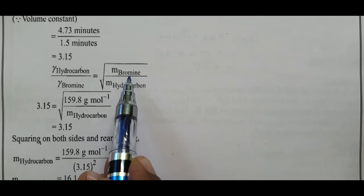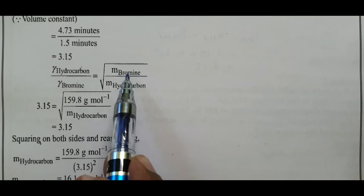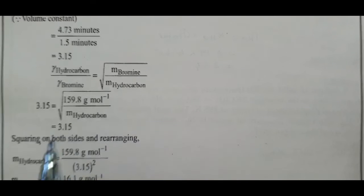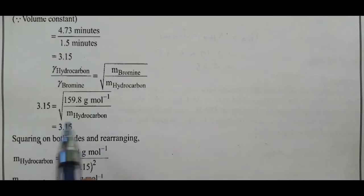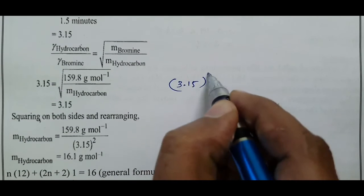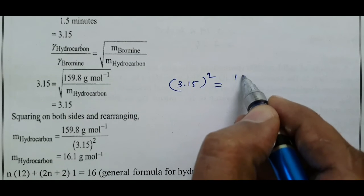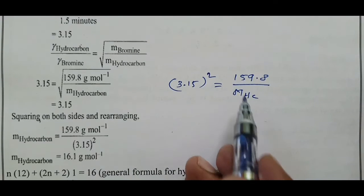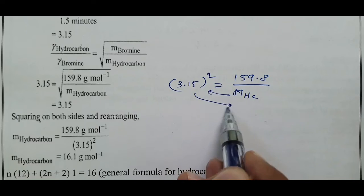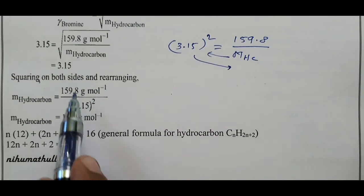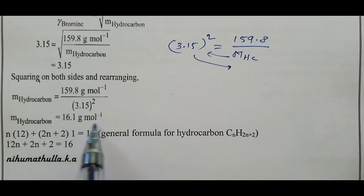Bromine atomic weight ≈ 80, so molar mass of Br2 = 2 × 80 = 160 g/mol. 3.15² = 159.8 / M_hydrocarbon. Therefore M_hydrocarbon = 159.8 / (3.15²) = 16.1 g/mol.